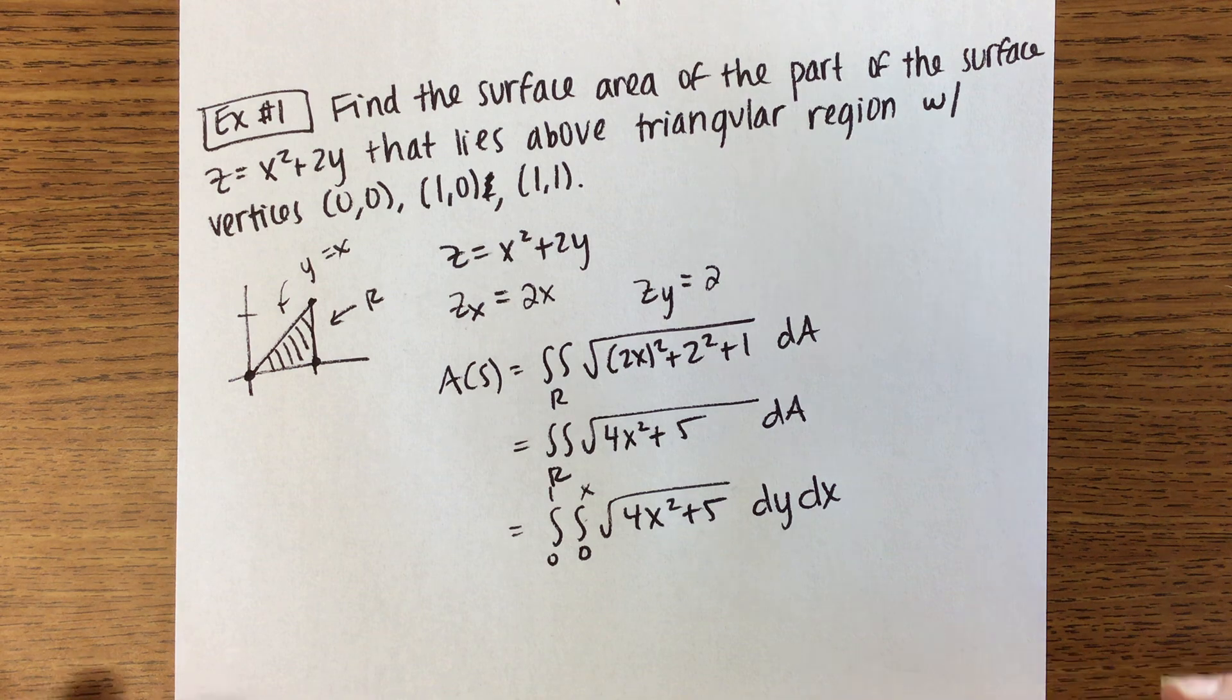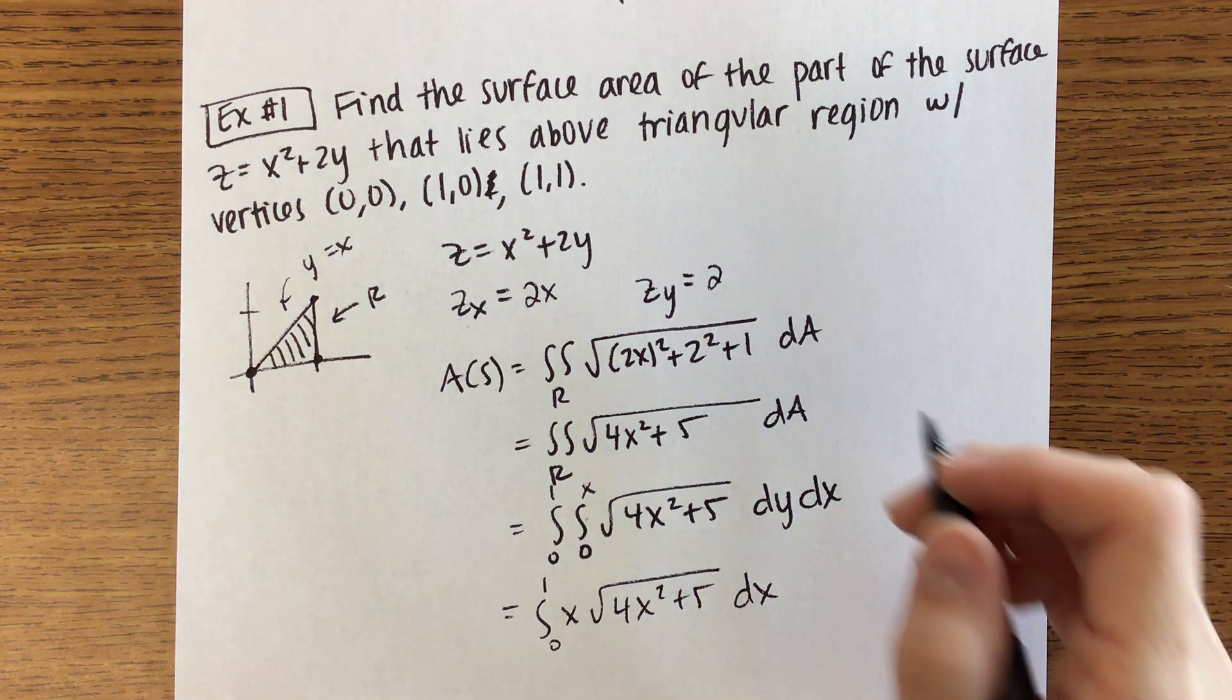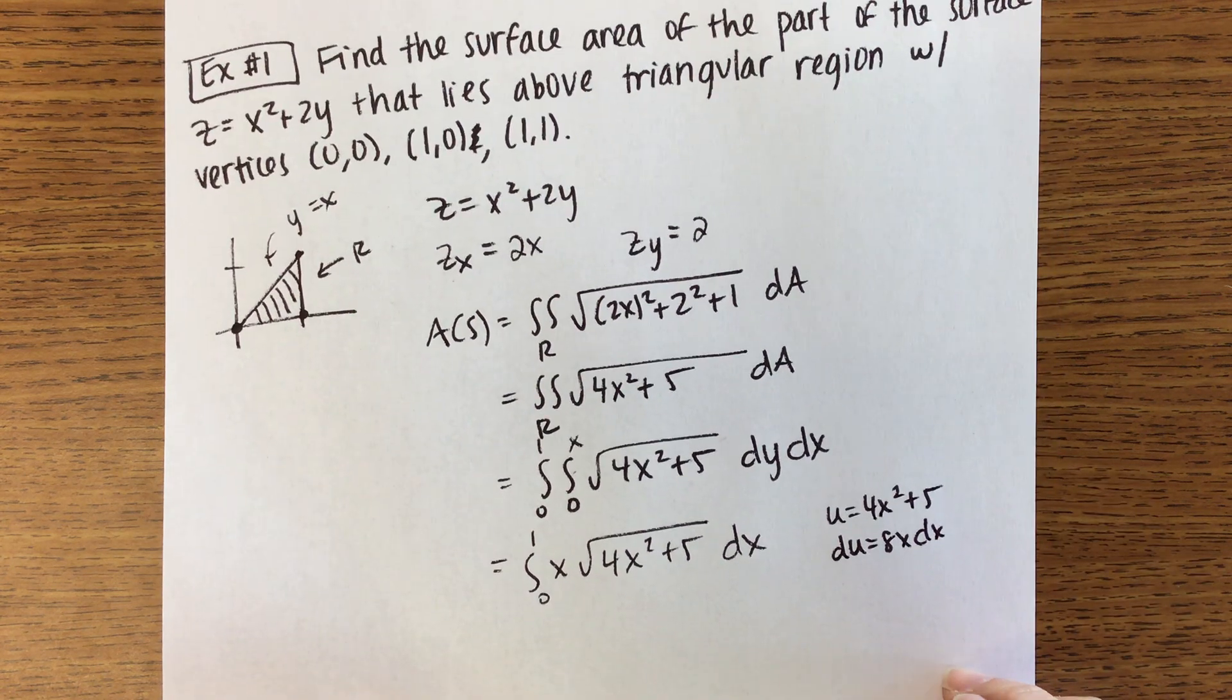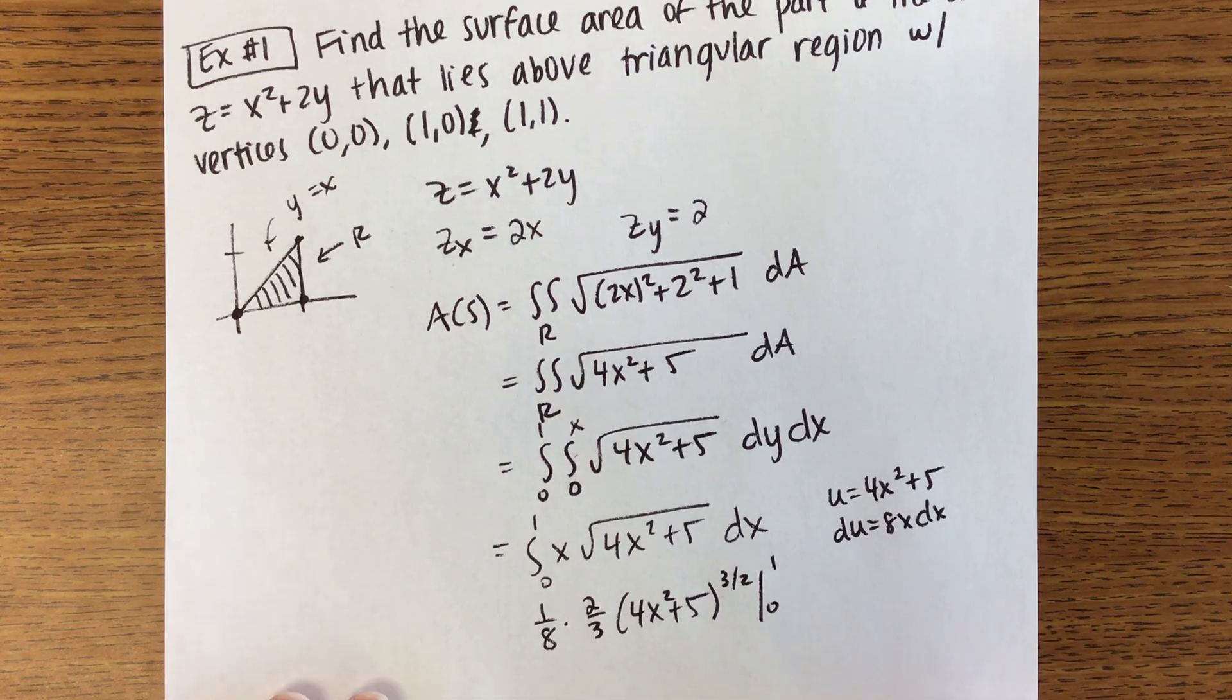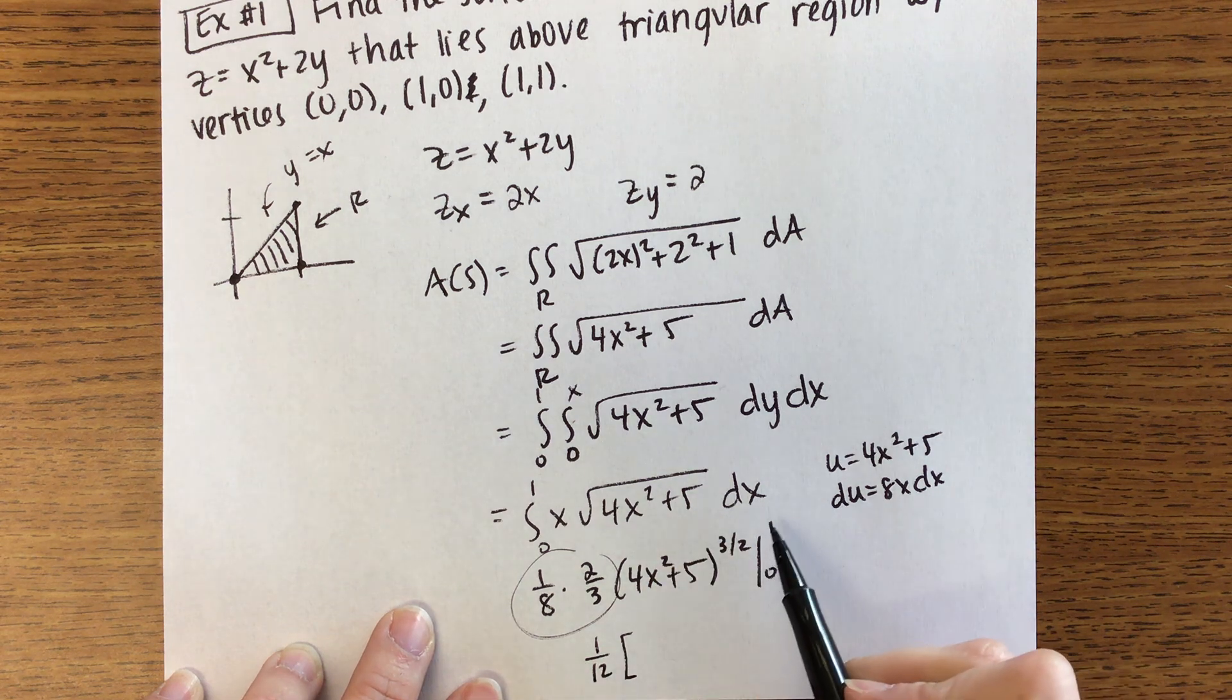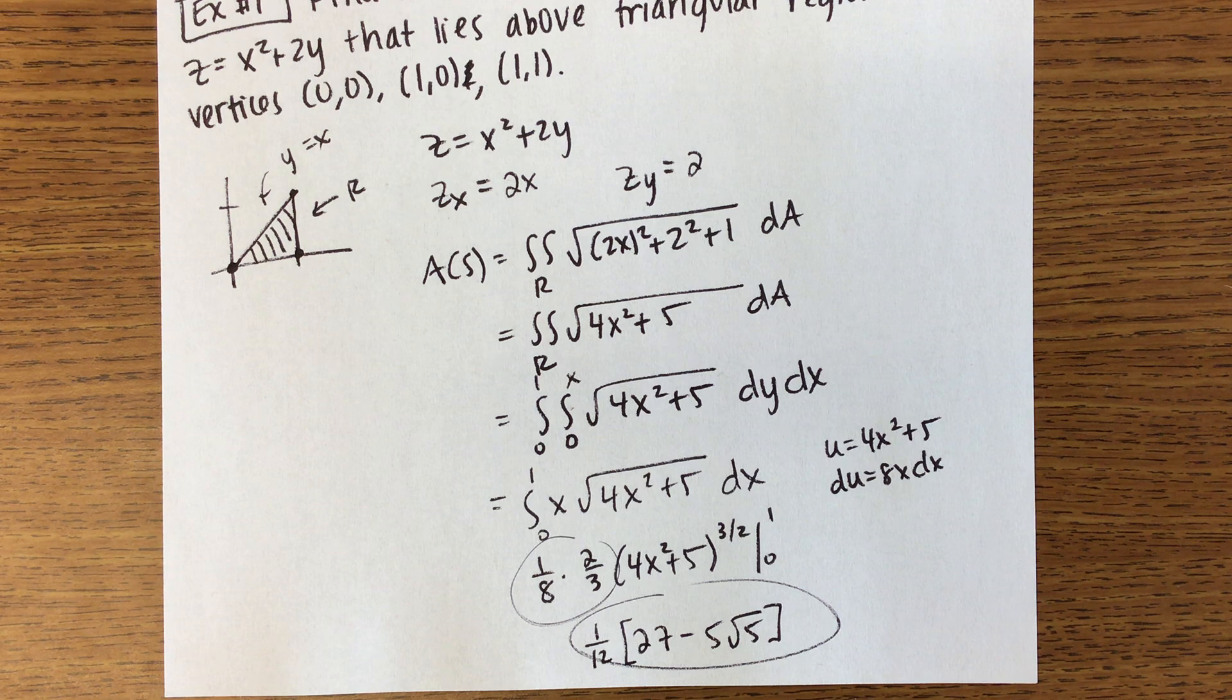Okay, so integrate with respect to Y you'll end up with a Y in front but then the X will come out so this is really 0 to 1 of X times the square root of 4X squared plus 5 DX. If you think of your U being that 4X squared plus 5 your DU would be 8X DX. So if we integrate we're going to have a 1/8 since we're missing that 8, 2/3, 4X squared plus 5 to the 3/2 from 0 to 1. These two fractions multiplied end up being 1/12. If I plug a 1 in I get 9 to the power of 3/2 which is 27. If I plug in a 0 I get 5 to the 3/2 which is 5 root 5.